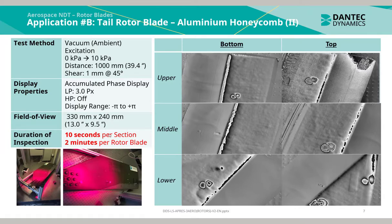The duration of the inspection per blade section took approximately 10 seconds, yielding a total inspection for the entire rotor blade of 2 minutes. Here are the individual phasemap images taken from the upper, middle and lower section on the bottom side of the blade and on the top side of the blade. As can be seen, there are multiple indications of potential defects.